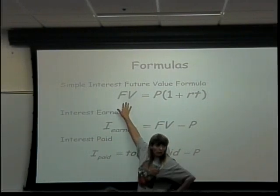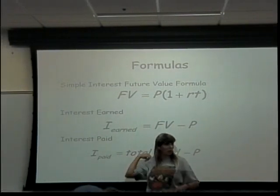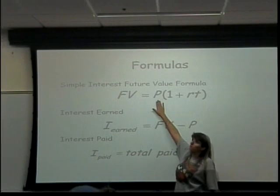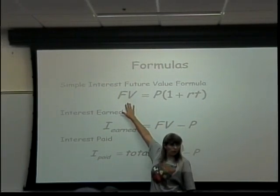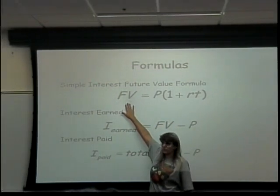FV means future value. That means the amount of money you have in the future. Another word that we use for future value is maturity value. Those are the same thing.